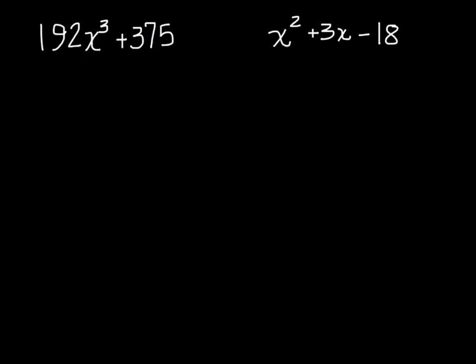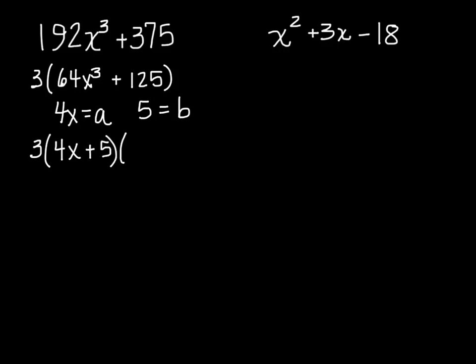Okay, GCF here would again be 3 and that's going to leave me 64x cubed plus 125. So I'm factoring 64x cubed would be 4x times 4x times 4x so that's going to be my A, 125 is 5 times 5 times 5 that's going to be my B, so I will have the 3 out front and I will do A plus B and A squared minus A times B plus B squared.